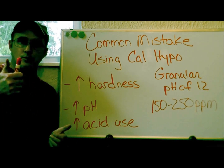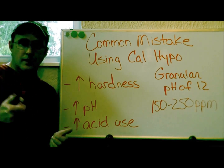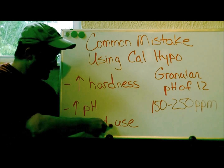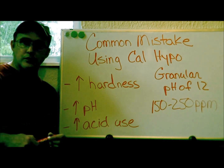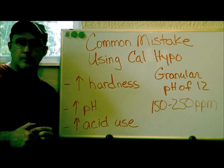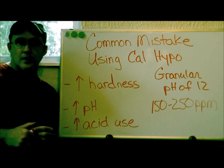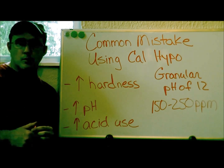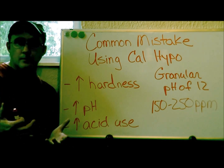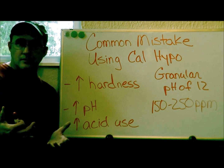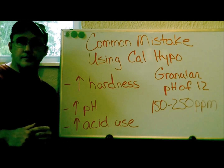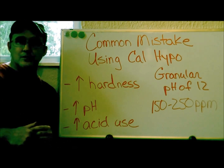Once your pH keeps going through the roof, you're going to have to add more and more acid to reduce it, so acid consumption is going to go up as well — and that's going to be more money out of your pocket. So bottom line: just use liquid chlorine and you'll be fine.